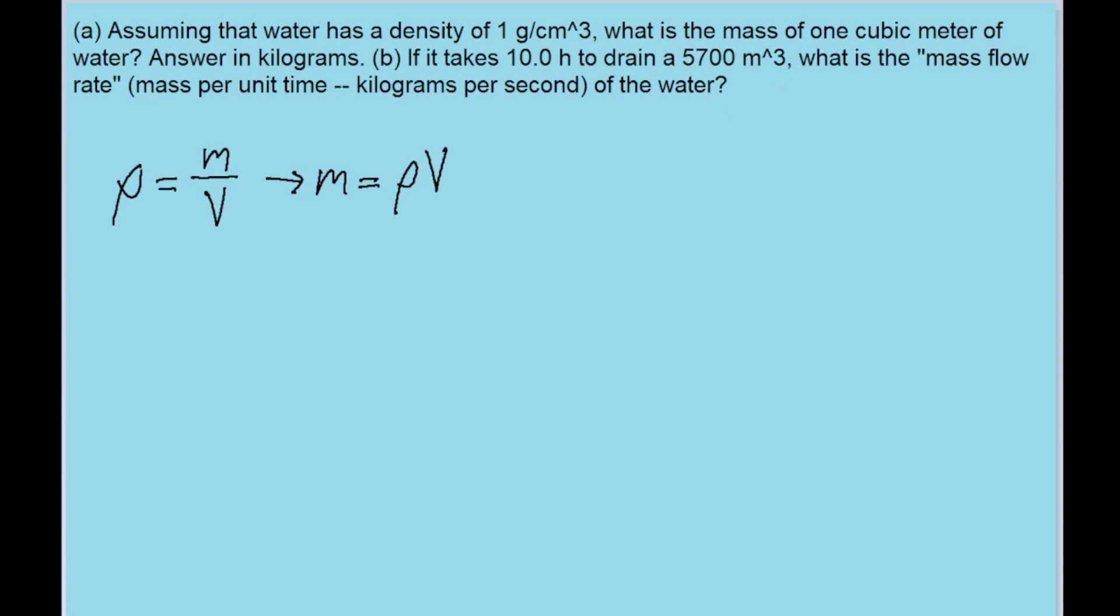So we have the volume of the water, one cubic meter, and we're also given its density, but we can't just plug these values into this equation yet because the units don't line up. The density we have uses centimeters while the volume we have uses meters, and the density uses grams while we're explicitly told to answer in kilograms.